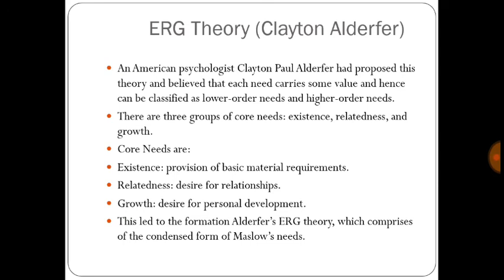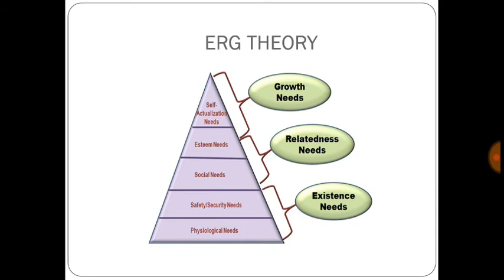The second theory is ERG theory, presented by American psychologist Clayton Paul Alderfer. He believed that each need carries some value and can be classified as lower-order or higher-order needs. The core needs are: Existence — provision of basic material requirements; Relatedness — desire for relationships; and Growth — desire for personal development. This ERG theory is essentially a condensed form of Maslow's needs. Existence needs correspond to physiological and safety needs; relatedness needs to social and esteem needs; and growth needs to self-actualization.